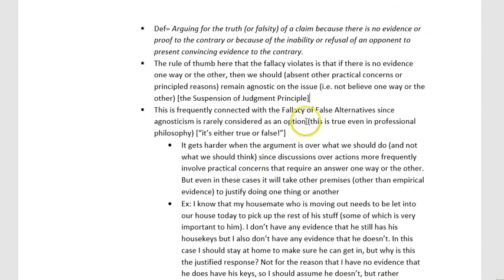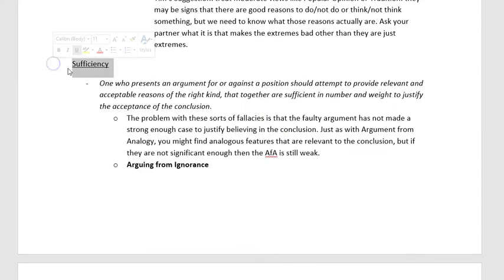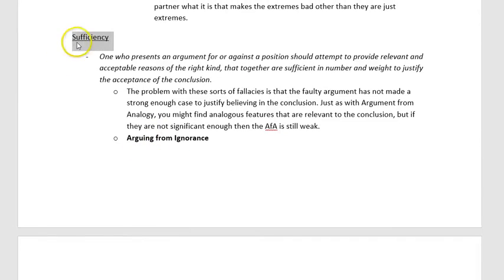To say there isn't enough evidence to draw a conclusion is itself a positive claim that requires defense — you could be right or wrong about it. It's not just wishy-washy. I also connect this with the fallacy of false alternatives, since agnosticism can easily be left out of our considerations. Even in professional philosophy I've seen that option forgotten — we're so eager to reach a determinate conclusion that we don't recognize we have insufficient evidence. That's incidentally why arguing from ignorance shows up under the sufficiency principle.